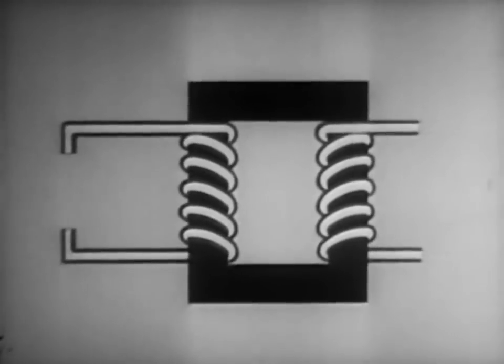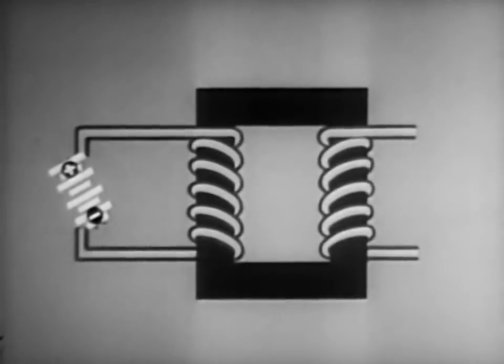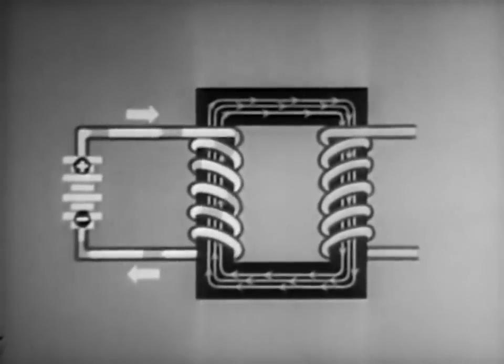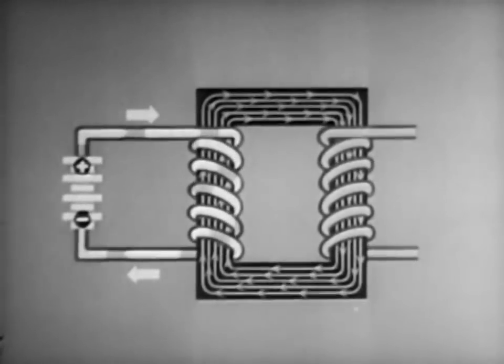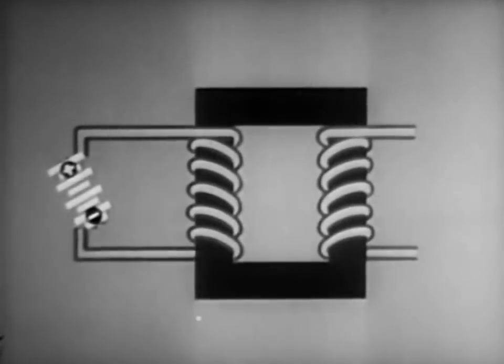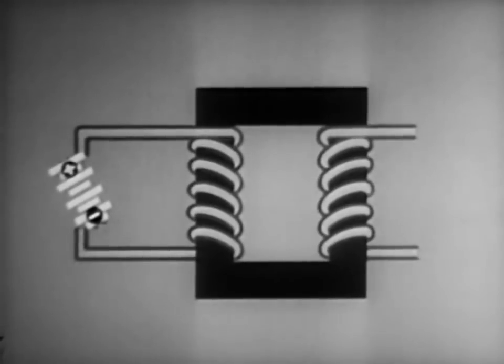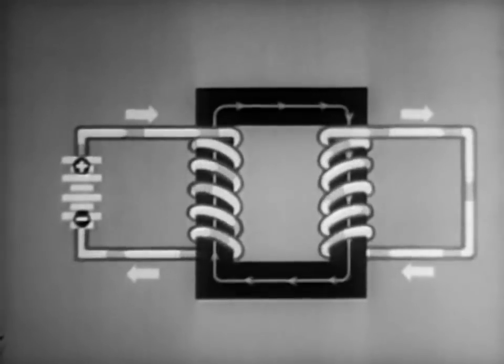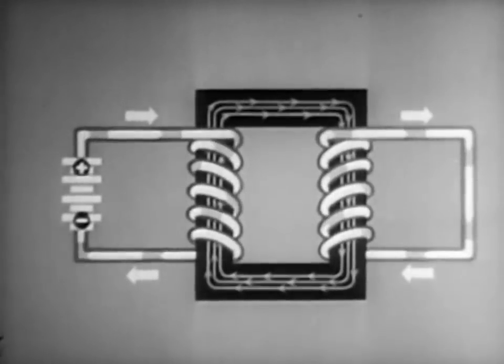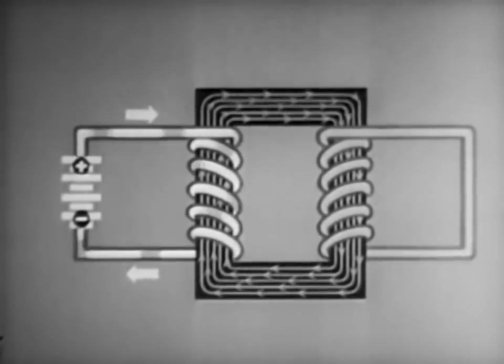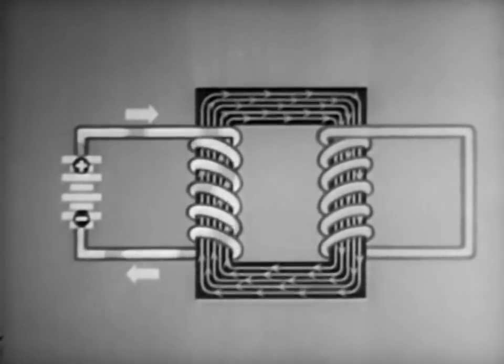Here's what happens when we send direct current through one of the windings. A magnetic flux builds up in the core. Now, let's see what happens when the other winding is part of a closed circuit. Current flows through it during the instant while the magnetic flux is building up. As soon as the magnetic flux reaches a steady value, however, this induced current disappears.